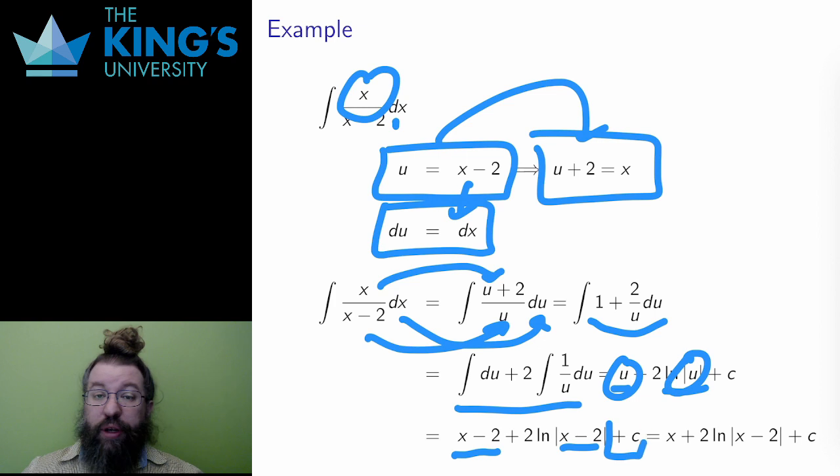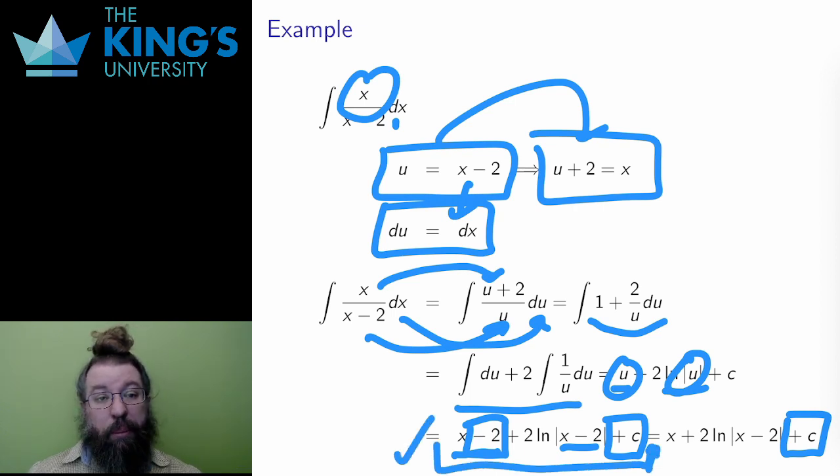There is one more subtlety with this final answer. There is an arbitrary constant at the end, but there is also a -2 in the middle. Since c is unknown, I don't really care if this constant is c or c - 2. So it's pretty common just to write c here instead of c - 2. This step is not at all necessary. The first form here is a perfectly valid answer, but since this is a common simplification, I thought I should still mention it.